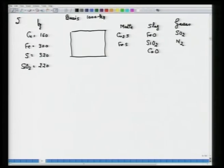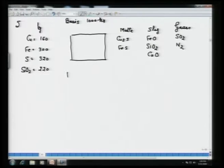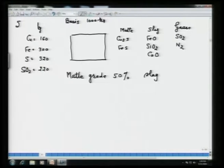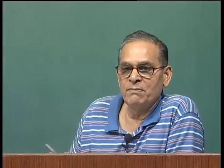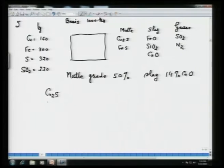Before doing heat balance, the material balance must be completed correctly — any mistake carries through to the end. The matte grade is 50 percent. Using the definition: grade = copper / matte mass, we get Cu₂S = 200 kg and FeS = 120 kg. The total matte is known, and now we calculate the slag.